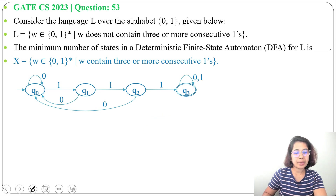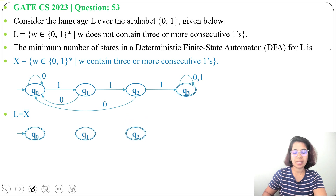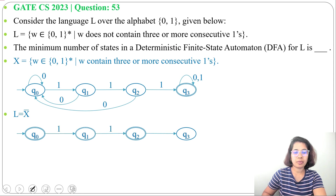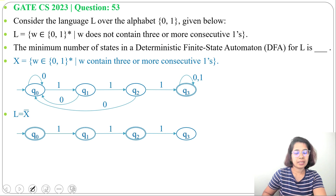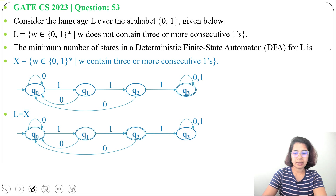But our language L is the complement of X. So we simply change final states to non-final and non-final states to final. Q0, Q1, and Q2 become final states, while Q3 becomes a non-final (dead) state. All transitions remain the same — from Q0 on '1' to Q1, from Q1 on '1' to Q2, from Q2 on '1' to the dead state Q3, with the same zero transitions as before.